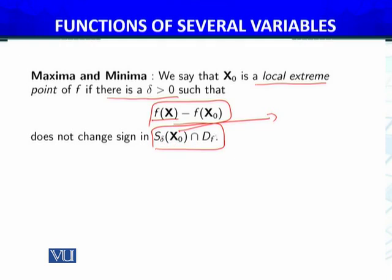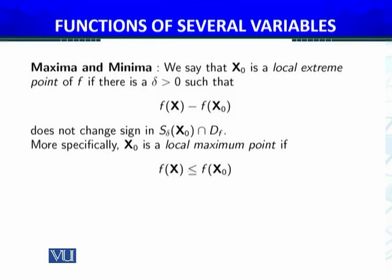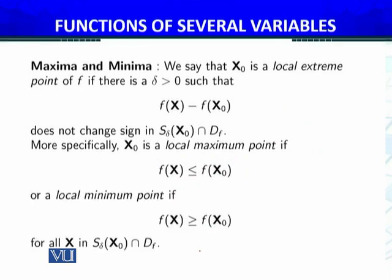In that small neighborhood, if f(x) − f(x₀) is negative — meaning f(x) ≤ f(x₀) for all x in the neighborhood — then x₀ is a local maximum point: all values in that neighborhood are less than f(x₀). It is a local minimum if f(x₀) is the smallest value, i.e., all other points in the neighborhood have values greater than f(x₀).